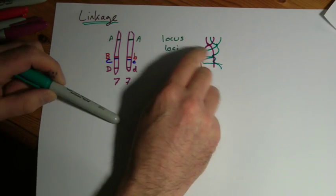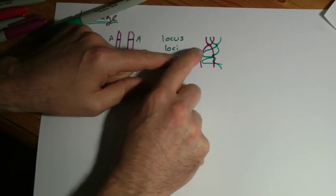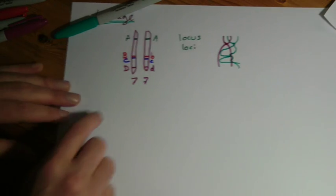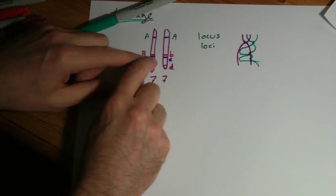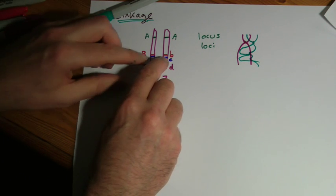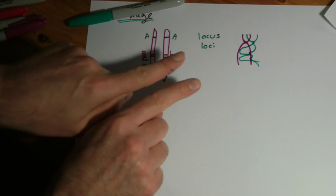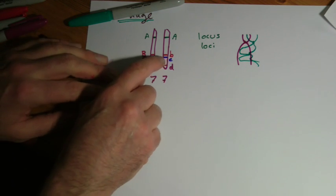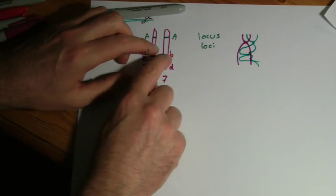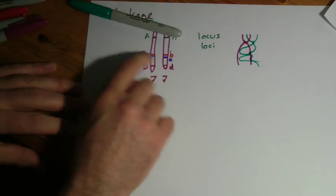These are our chiasmata, this is where we're going to be swapping sections of one chromatid onto another. Now because these are just so close to each other, unless you get a crossing over, a chiasma right between those two genes, and they might be right next to each other on the chromosome, unless the crossing over happens to be right between them, they will only ever tend to get passed over together.